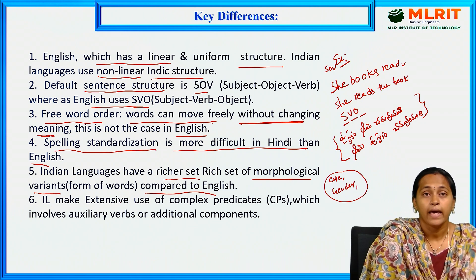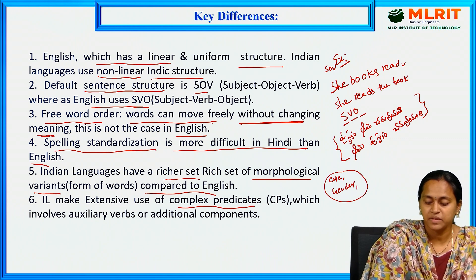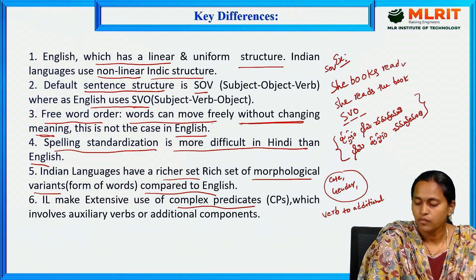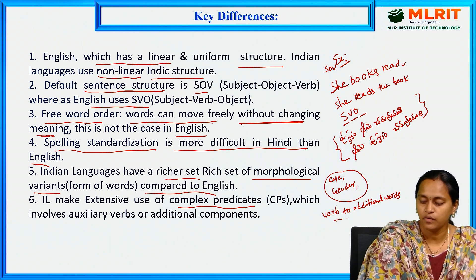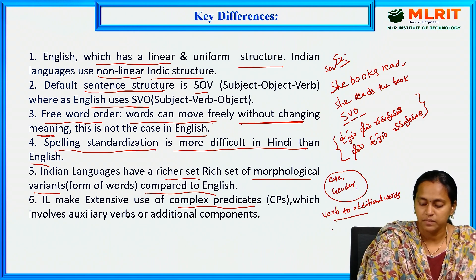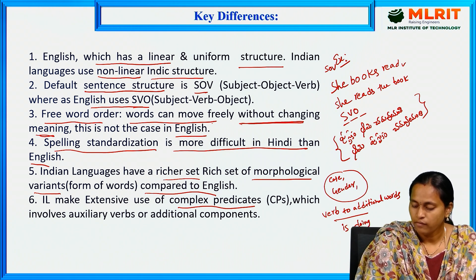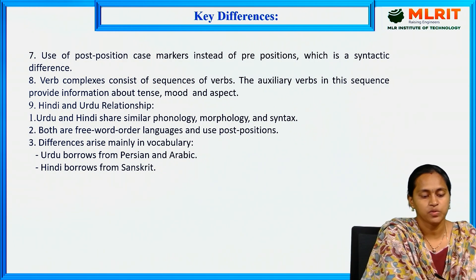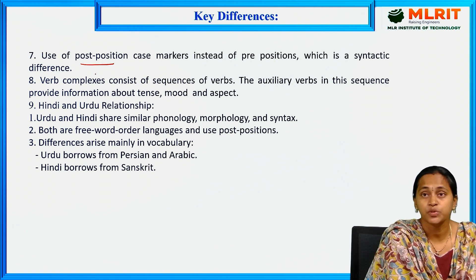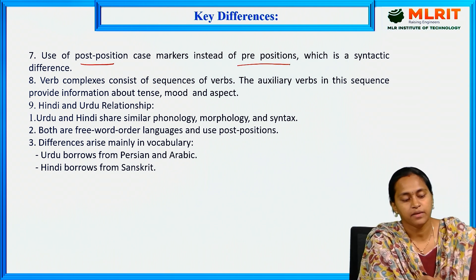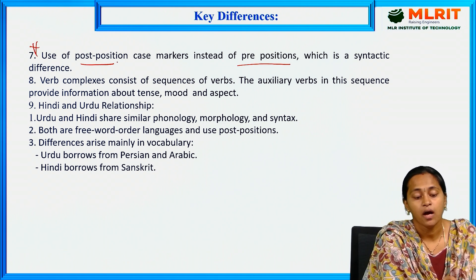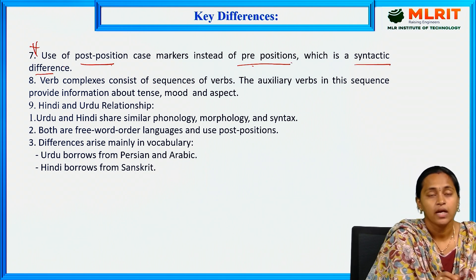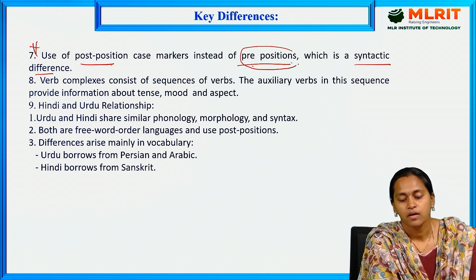Indian languages make extensive use of complex predicates, which means adding a main verb to additional words. For example, 'ches kuntu' means 'is doing' — a verb is added to another word. Indian languages also use post-positions instead of prepositions, which is a key syntactic difference. Indian languages only use post-positions, not prepositions.